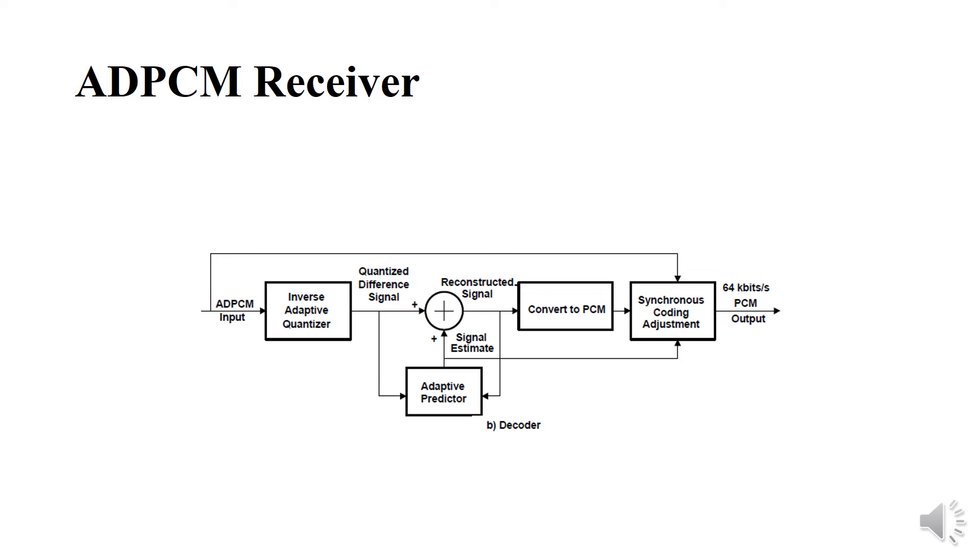ADPCM receiver: The ADPCM input is given to the inverse adaptive quantizer. Then the quantized difference signal is given to the summer and the reconstructed signal is given to convert to PCM signal. Then the synchronous coding adjustment. Finally we have the PCM output. The signal estimate is also given to the synchronous coding adjustment. Then the reconstructed signal is given to the adaptive predictor.